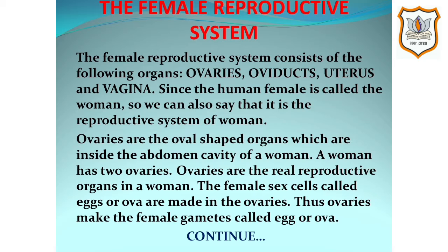Students, please note that you all have to draw the male and female reproductive system in your notebook. Now we will study the female reproductive system. The human female reproductive system consists of the following organs: ovaries, oviducts, uterus, and vagina. The human female reproductive system is shown in our next slide.